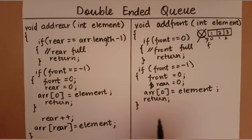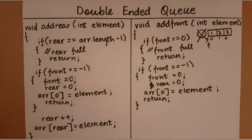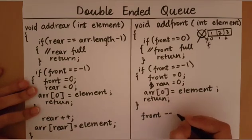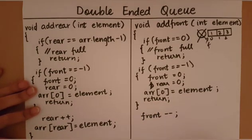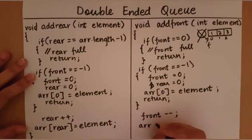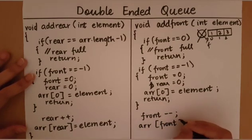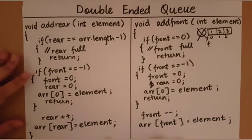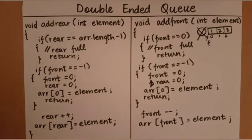When we reach the remaining code, we deal with all the normal add-front cases. In a normal situation, when we want to add an element to the front of the queue, we decrement front by one, then store the element in the array at index front. After this, our work for the function is done.